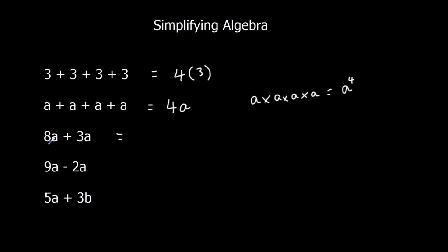If I've got 8 a's plus 3 a's, I can add them up. And that's 11 a's. In the same way, I can take them away. 9 a's take away 2 a's is 7 a's.